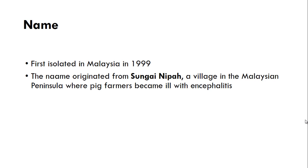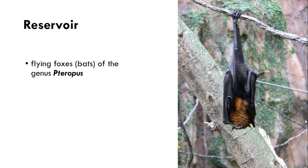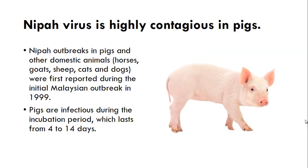Sungai Nipah is a village in the Malaysian Peninsula where pig farmers became ill with encephalitis. The reservoir is bats belonging to the genus Pteropus. Nipah virus can affect pigs and other domestic animals, and in pigs it is highly contagious. Pigs are infectious during their incubation period, which can last from 4 to 14 days.